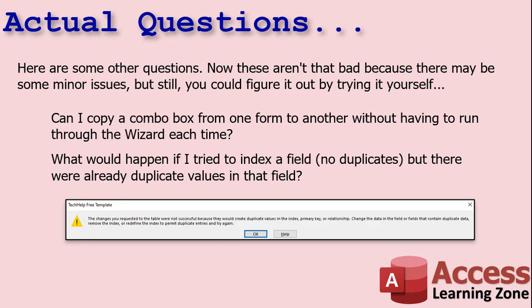Here are some other questions — these ones aren't quite so bad because there could be some minor issues, but still, if you could figure it out by trying it yourself, do it. Can I copy a combo box from one form to another without running through the wizard each time? Sure — copy that combo box, see if it works, test it, try it. You've got to make sure the field name is the same so the control sources match, but aside from that, yeah — easy to find out for yourself. What would happen if you tried to index a field with no duplicates, but there are already duplicate values in that field? Give it a shot — it'd take you 30 seconds to find out. You'll get an error message saying there are duplicate values.